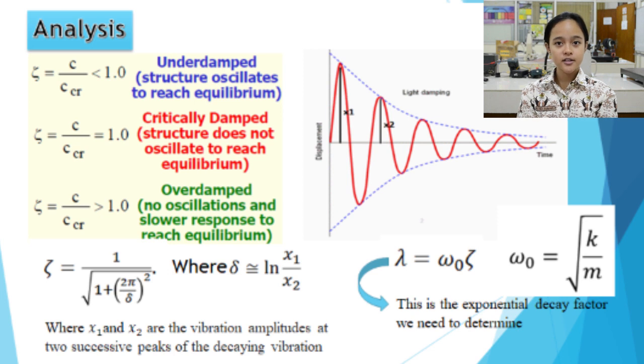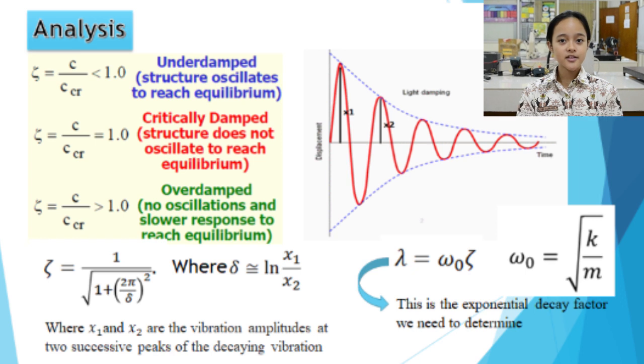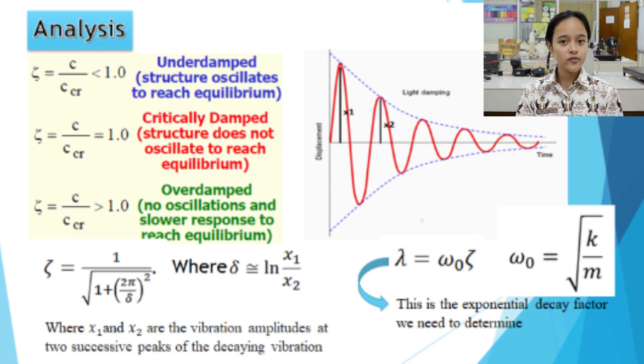The period of oscillation in a spring-mass system depends on the mass and the spring constant. However, there are three different conditions: underdamped, critically damped, and overdamped. The damping is determined by the value of the exponential decay factor, which is why it is important to determine it to evaluate the spring-mass oscillatory system. This work focuses on underdamped oscillation.